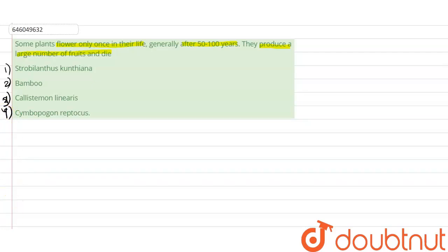We have to select which of the following plant shows the above characteristic perfectly. So the first option is Strobilanthus cunthiana. As we all know, it is also known as Neelkurunji.